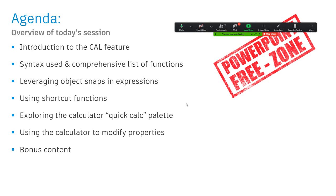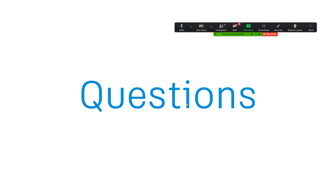Today we looked at the geometric calculator: the syntax for how it's used, leveraging object snaps, shortcuts that are available, the calculator on a palette, accessing it from the properties palette, and how to find the documentation. If you haven't seen the calculator before, I hope this gives you the inspiration to explore it and see how you can incorporate it into your workflow. If you have used it, I hope this showed you one or two things you hadn't considered. We're right at the top of the hour — we begin and end on time. Any unanswered questions are documented and we will get back to you. Thank you so much for coming — we look forward to seeing you again in a couple of weeks.